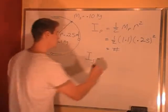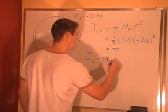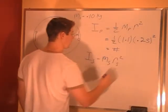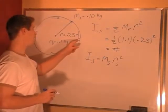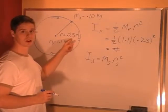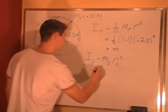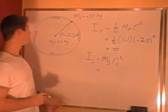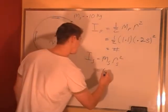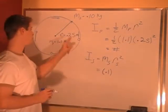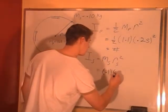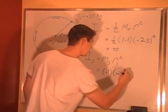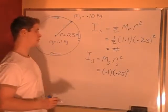So for the spoons we have mass of the spoon times the radius of the spoon squared. Now the spoon is set on the outer edge of the plate so the radius is also 0.25 meters for that. Mass of the spoon is 0.1 kilograms, radius of the spoon is 0.25 meters. This gives us some number.